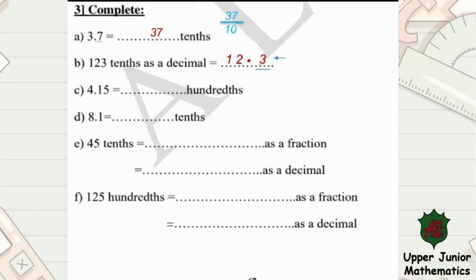4.15 equals how many hundredths? You have two places after the point, so the denominator is 100, and write the 415 up. Now, how do you read this fraction? 415 hundredths. 8.1 equals how many tenths? One place after the point, so the denominator is 10 and 81 is written up. Let's read it: 81 tenths.